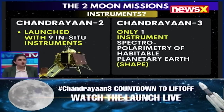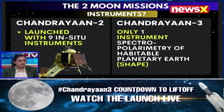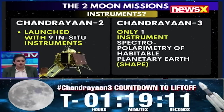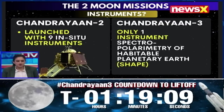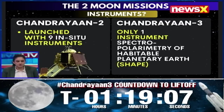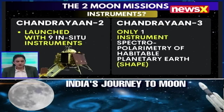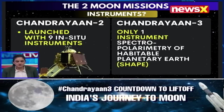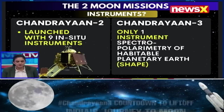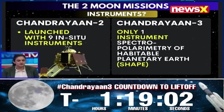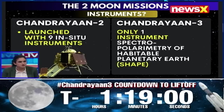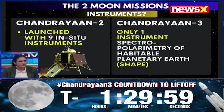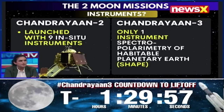For Chandrayaan-2, it was launched with nine in-situ instruments, but Chandrayaan-3 apparently goes with only one instrument, which is the spectropolarimetry of habitable planetary Earth — an instrument called SHAPE. Could you shed some light on what exactly is the use?